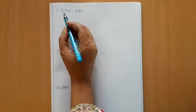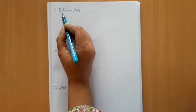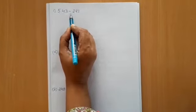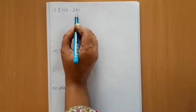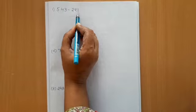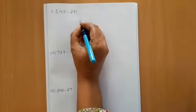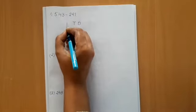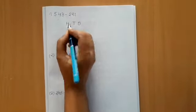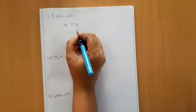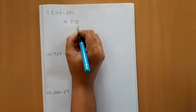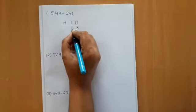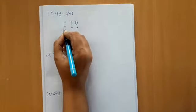For example, now we will subtract 543 minus 221. For that, we will write first ones, tens, and hundred. Now, we will write the numbers. In the ones place, we will write 3, 4, and 5.